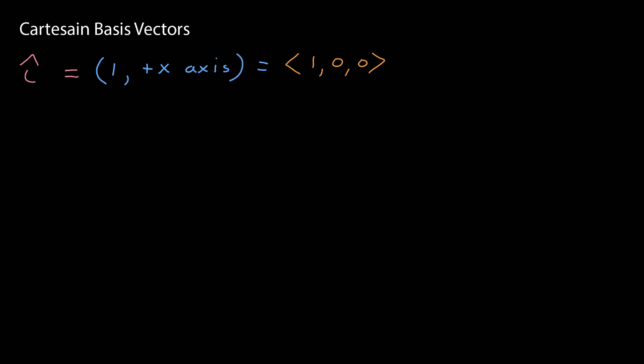Finally, I want to introduce you to some very special unit vectors, the Cartesian basis vectors. The first one, which is an i, where that hat is where the dot is supposed to be, called i hat, has a magnitude 1, and it points along the positive x-axis. It would have an ordered set notation that looks like this, 1, 0, 0. And then of course, there's a j hat, which is the unit vector that points along the positive y-axis. And finally, k hat, a unit vector that points along the positive z-axis.